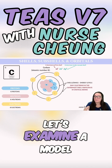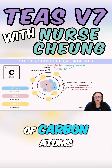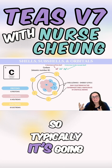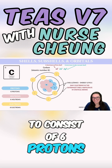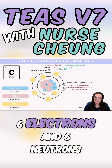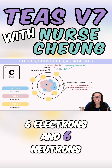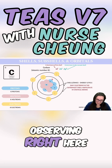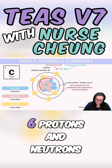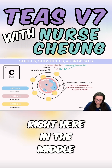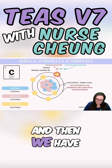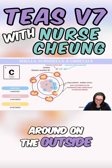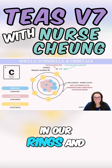To bring this all home, let's examine a model of carbon atoms. It typically consists of six protons, six electrons, and six neutrons. We can observe that right here — the six protons and neutrons are in the middle, and the six electrons are floating around on the outside in our rings.